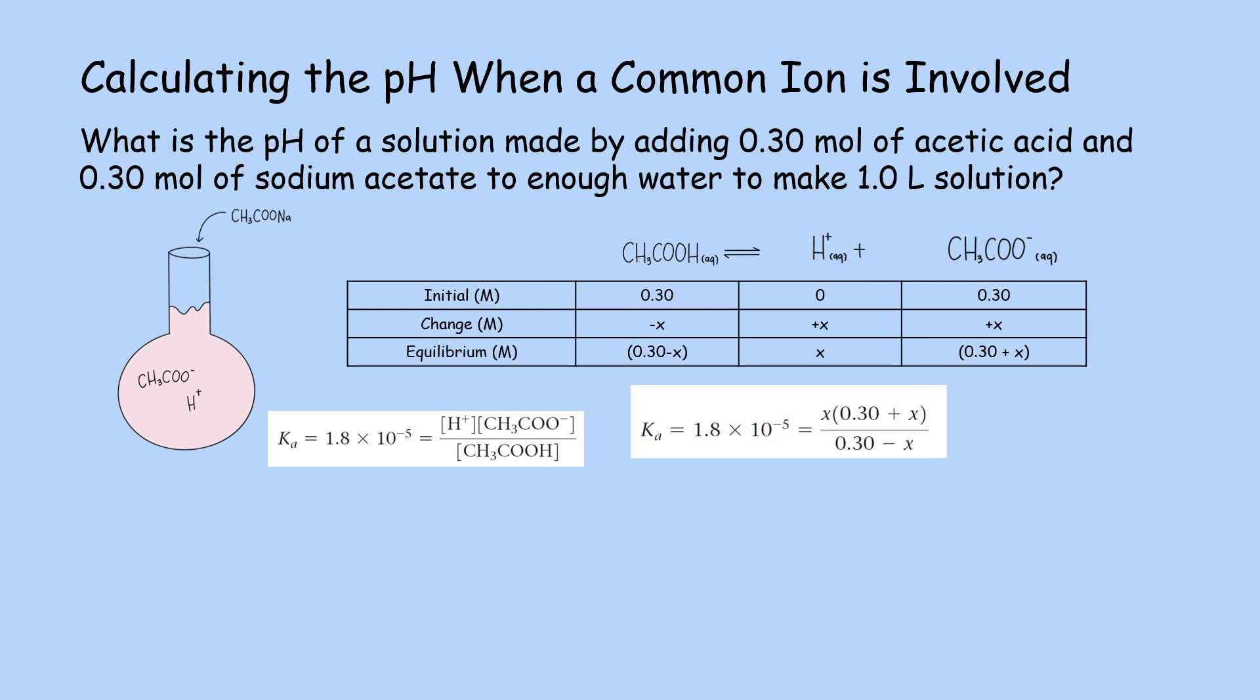Because Ka is small, we assume that X is small compared to the original concentrations of acetic acid and acetate ion. We can ignore the very small X relative to 0.30 molar. It will become negligible, which will give us Ka equals X times 0.30 over 0.30. Now we can calculate for X, which is 1.8 times 10 raised to negative 5 molars, which is equivalent to the hydrogen ion concentration.